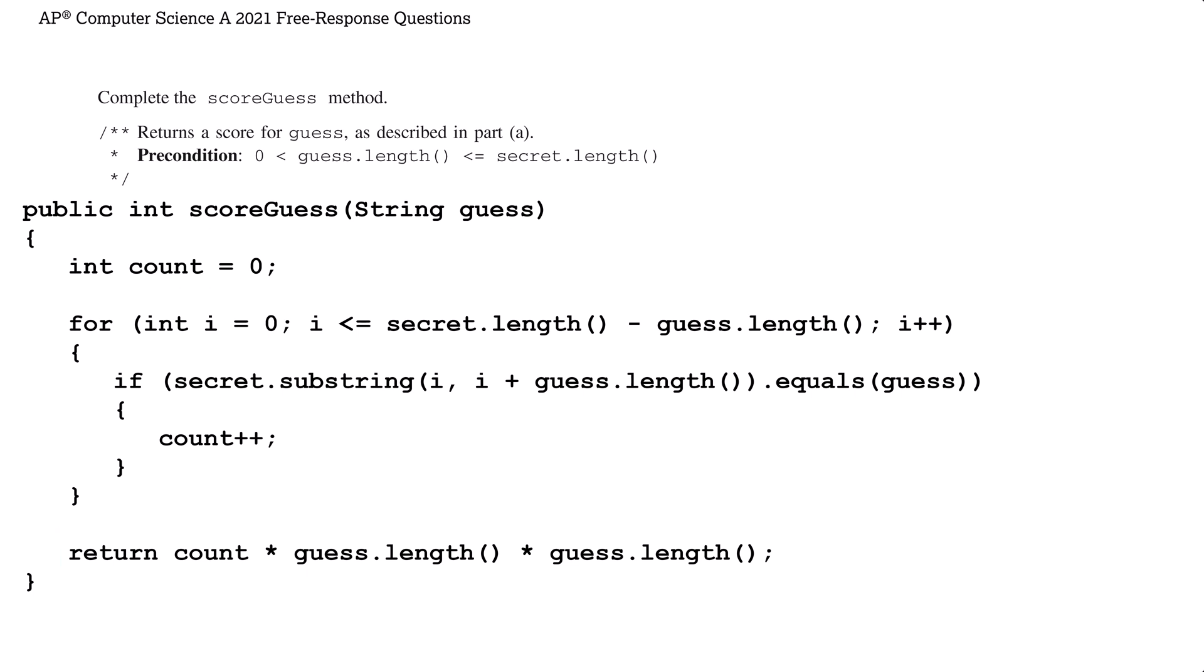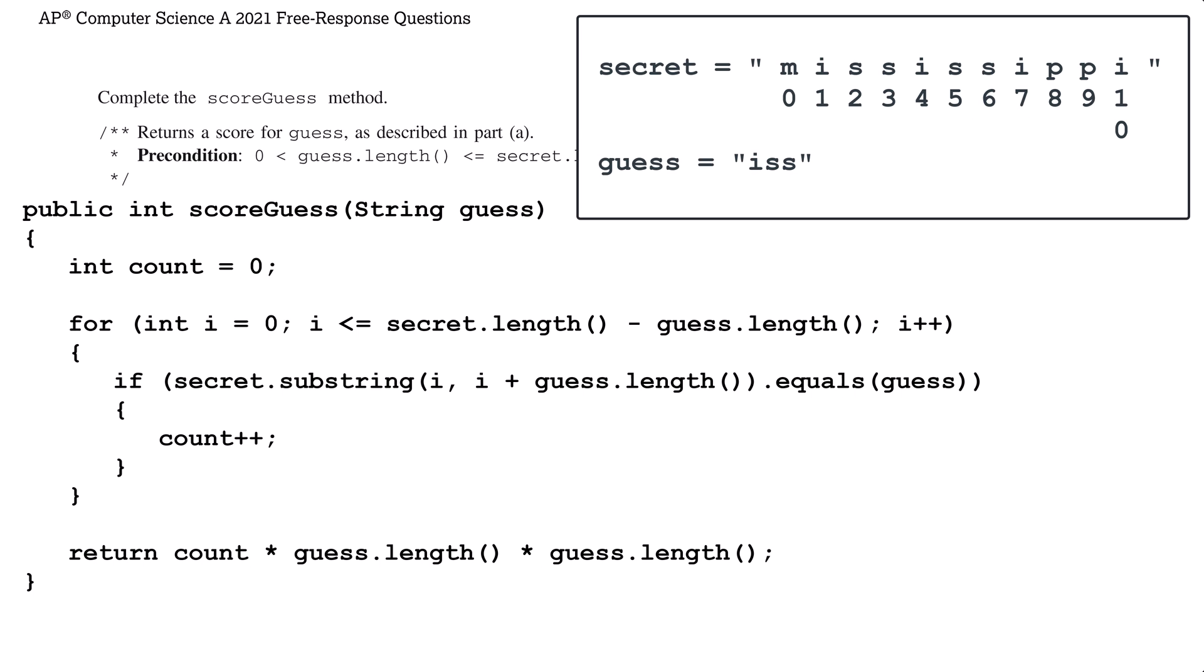In a problem like this, it is worth trying out the loop to make sure everything matches up. Let's use one of the examples from the instructions and say that secret equals Mississippi and guess equals ISS. The extra spacing between the letters is for visibility. Secret.length is 11 and guess.length is 3, so we'll continue the loop as long as i is less than or equal to 8. In this case, the first valid value of i is 0 and the last valid value is 8, so let's try out those two extremes and see if they work.